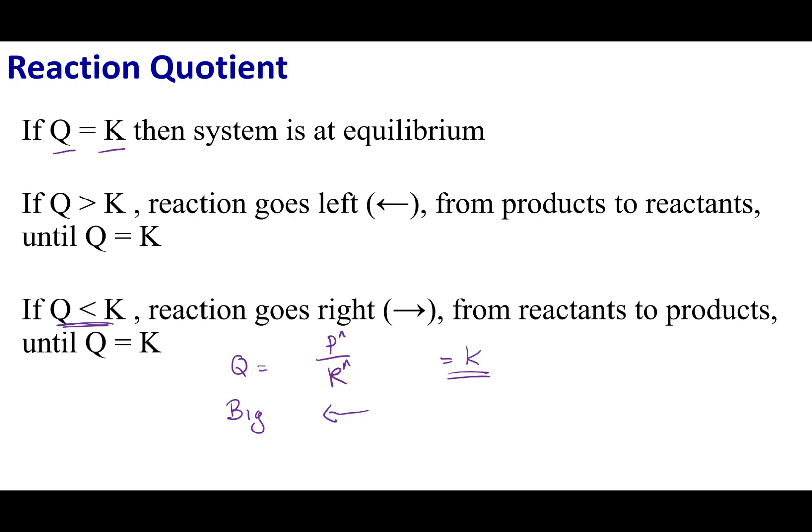Now, if Q is less than K, that means Q is a smaller number. Well, that means I need to increase this value. So, that means I have to make more products. If that's the case, I need to get my reactants to convert to products, or I'm going to shift my reaction to the right.